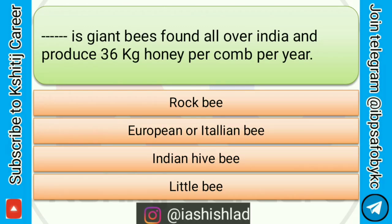Dash dash is a giant bee found all over India and produces 36 kg of honey per comb per year. Options are: rock bee, European or Italian bee, Indian hive bee, little bee. Correct answer is rock bee.